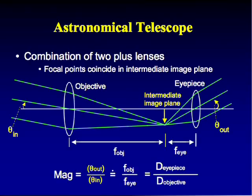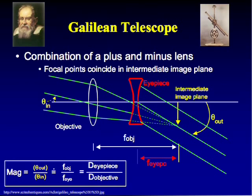The problem with the astronomical telescope is that the image is inverted — rays cross at the image plane. Galileo's improvement: place a minus lens before the rays converge, so they diverge back to parallel without forming an intermediate image. This produces an upright image. The telescope is shorter because the focal lengths overlap rather than add, and magnification is still eyepiece power over objective power.